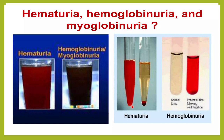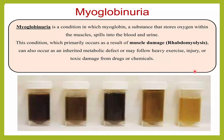In hematuria, when you centrifuge the urine, there is a sediment and the supernatant is clear. Whereas in hemoglobinuria, when you spin it, the entire plasma will be reddish in color. Myoglobinuria is a substance present in the muscles which spills into the blood and urine whenever there is muscle damage or rhabdomyolysis. These are the various colors you can see in case of myoglobinuria.